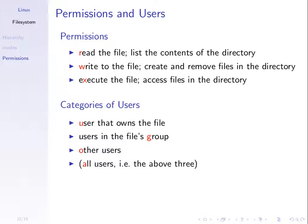The permissions on a file — or what we called access rights in the lecture — are whether we can read a file, meaning see the contents; write to the file, meaning modify the contents; and execute the file, meaning run the program stored in that file.